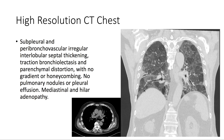Additionally, there's subpleural peribronchovascular interlobular septal thickening. There's traction bronchiectasis and parenchymal distortion. No gradient or honeycombing. No pulmonary nodules or pleural effusion. And there is mediastinal and hilar adenopathy.